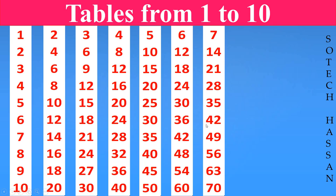7 6s are 42. 7 7s are 49. 7 8s are 56. 7 9s are 63. 7 10s are 70.